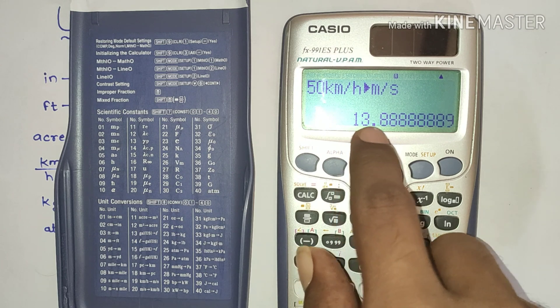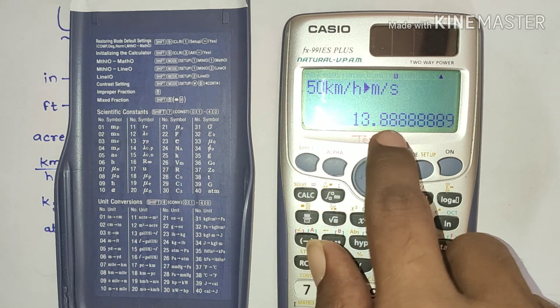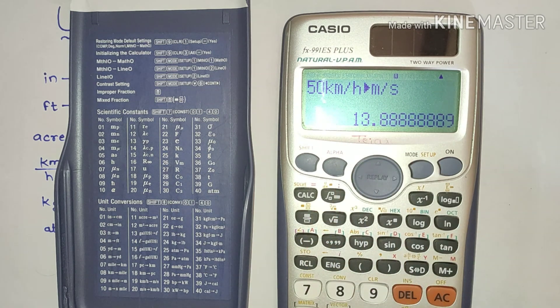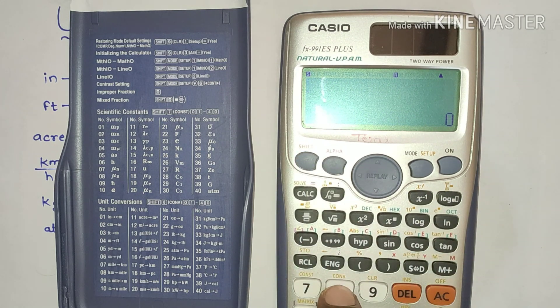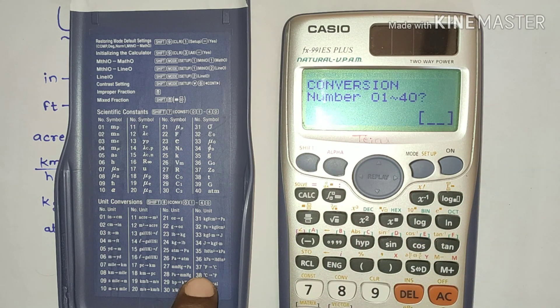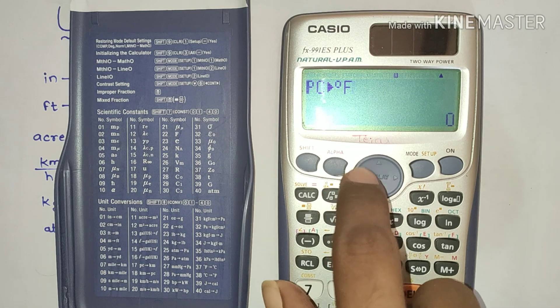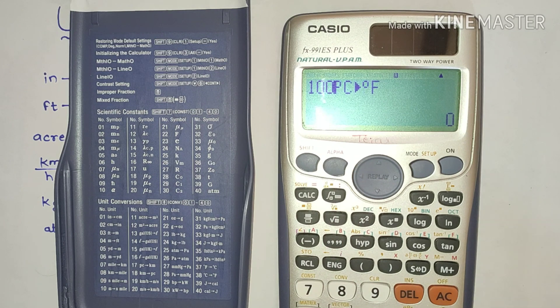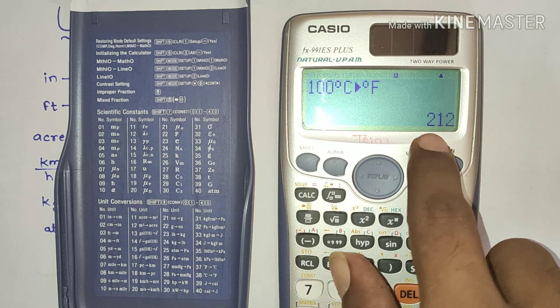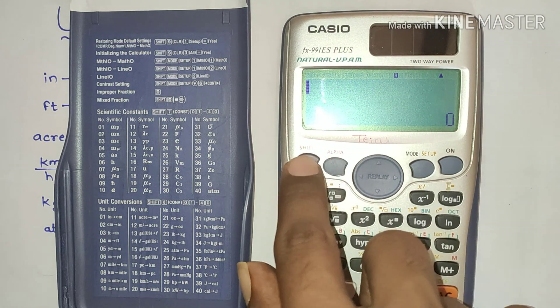Now again, let's press shift 8. Let's do degree Celsius to Fahrenheit. The number before that is 38, so press 38. Let's consider 100 degree Celsius, so how much Fahrenheit? Fahrenheit comes to be 212 Fahrenheit.